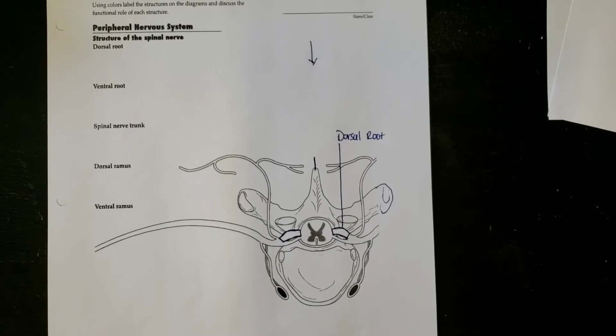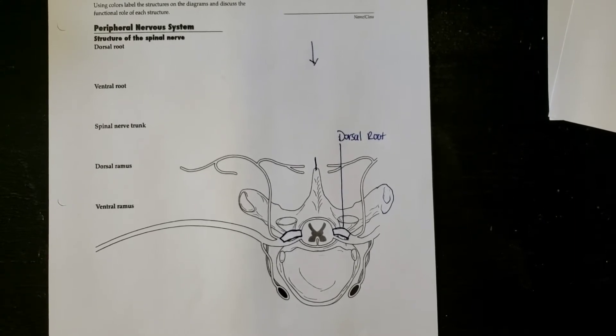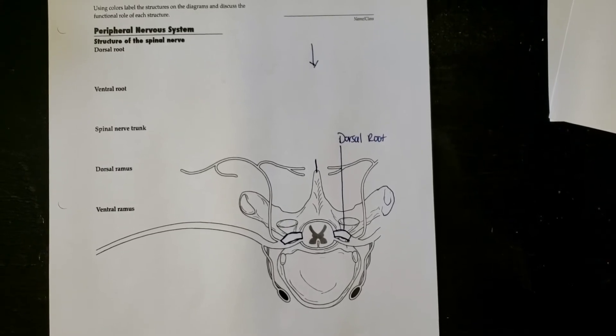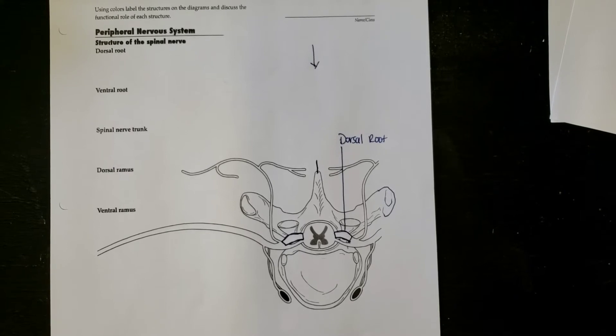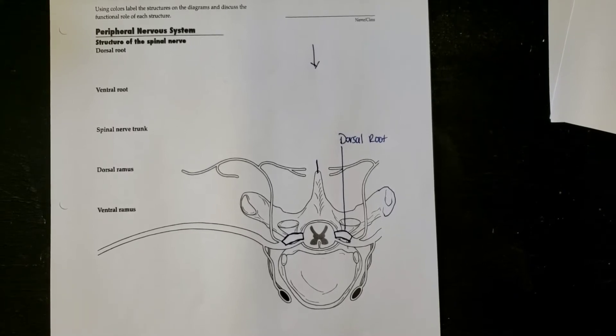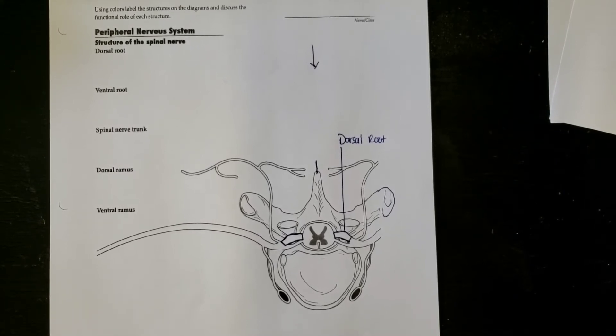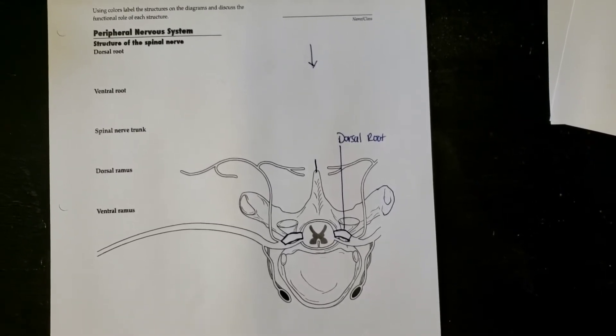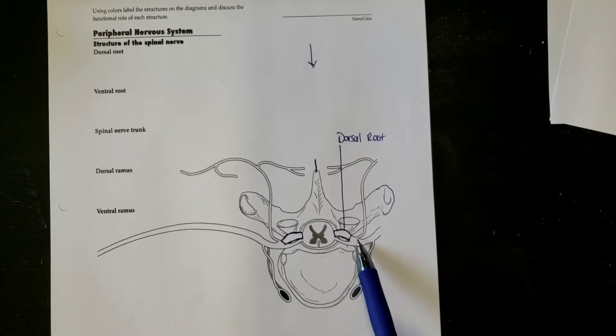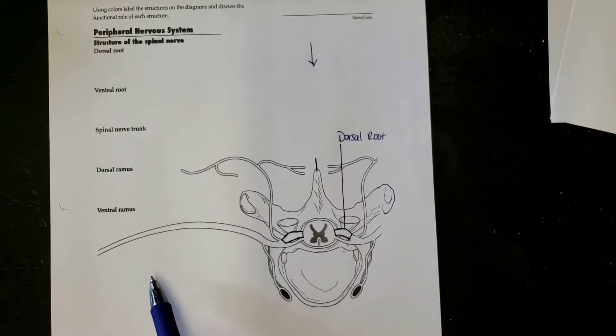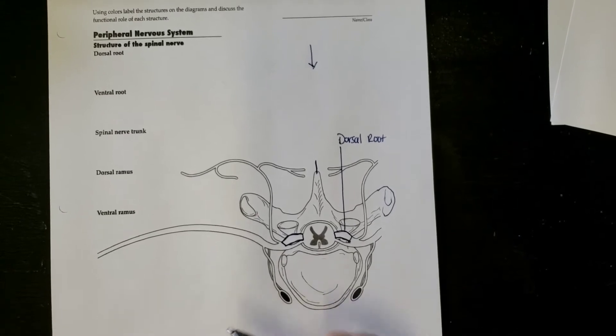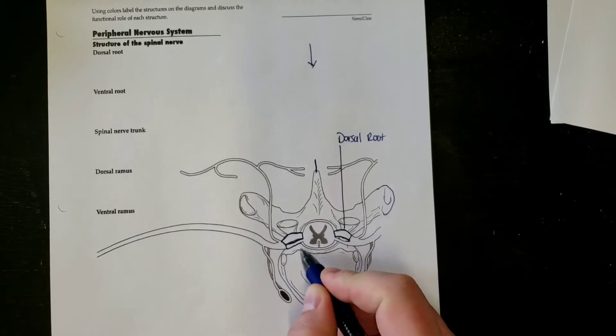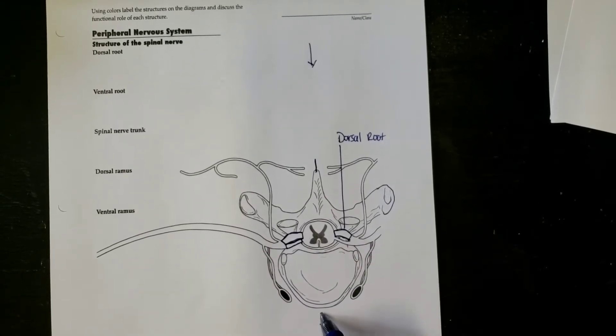Basically what that entails is sensory information passes through this section. When you receive sensory information from one of your senses, it's going to be received through the dorsal root. And any response to that is going to be found in the ventral root. We know ventral is going to be this anterior section here.